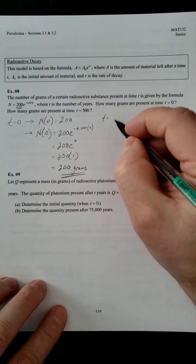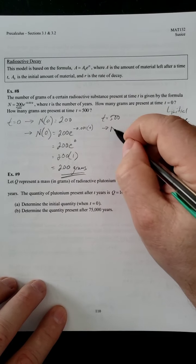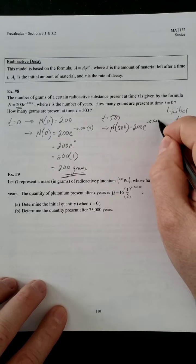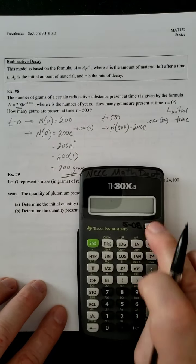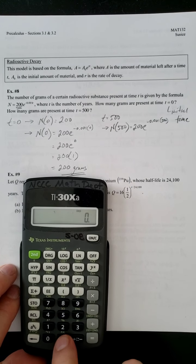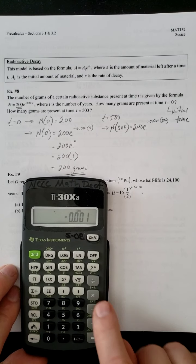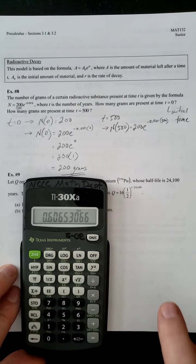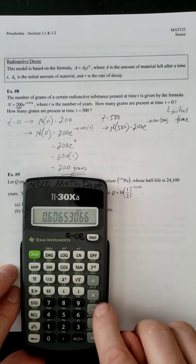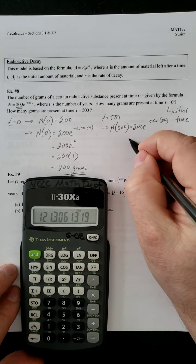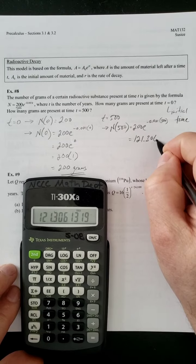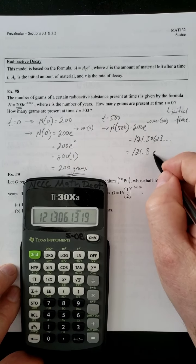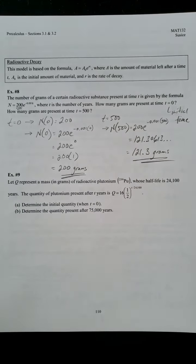Now, for the second part, T equal to 500, we really just have to plug it in and see what we got. Let's see what our exponent comes out to be. So, 0.001 negative times 500 equals that. So there's our exponent. Now we have to E it, so second. That gives us that value. And now we have to multiply it by the 200. So we get 121.30613 and so on. If we round that to one decimal place, so that's going to be in grams.